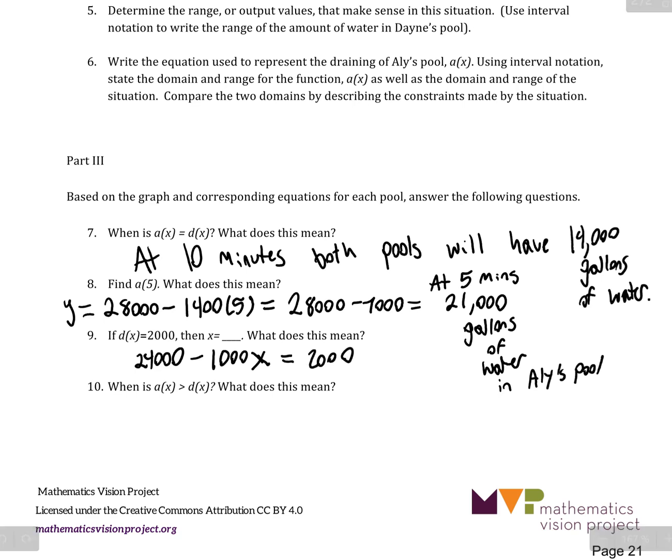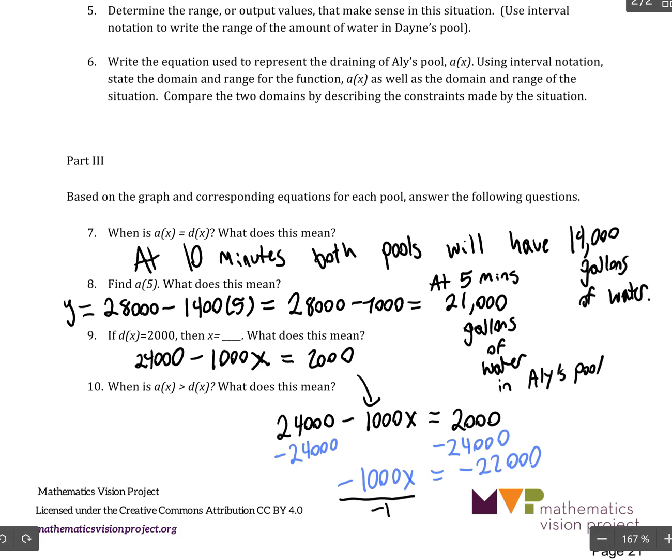So, we can now solve this equation, which I'm going to do down here. So, we could subtract 24,000 on both sides of the equation. And we get negative 1,000X equals negative 22,000. And then divide both sides by negative 1,000. And we would get the X equals 22.